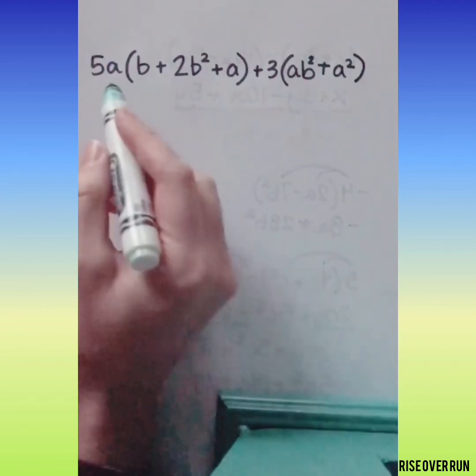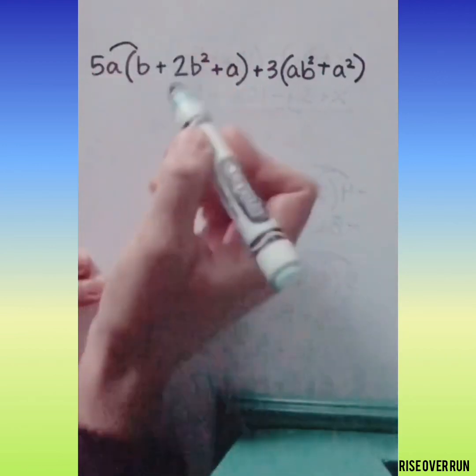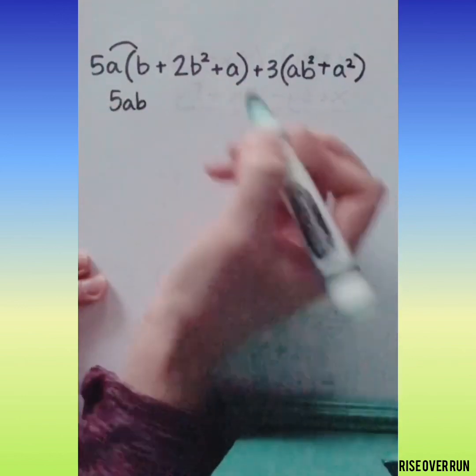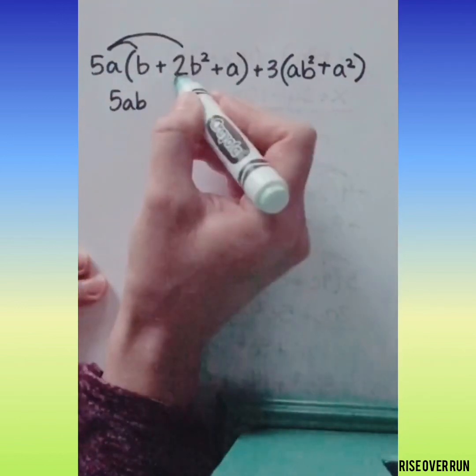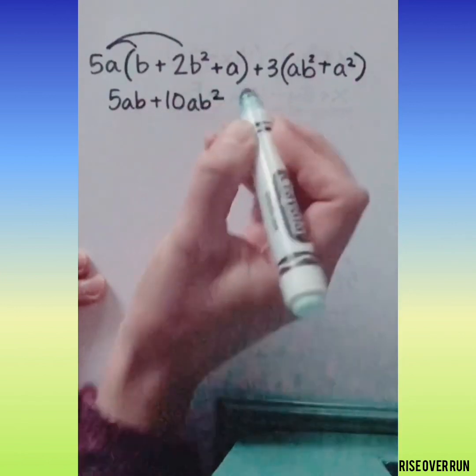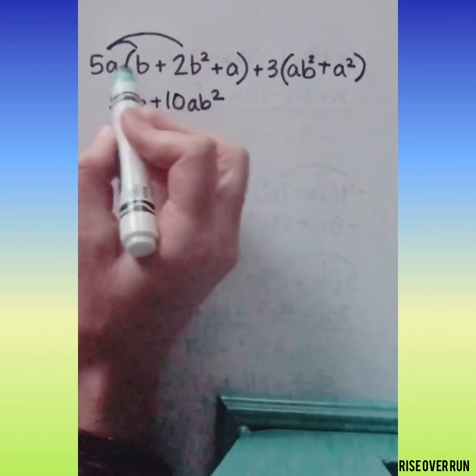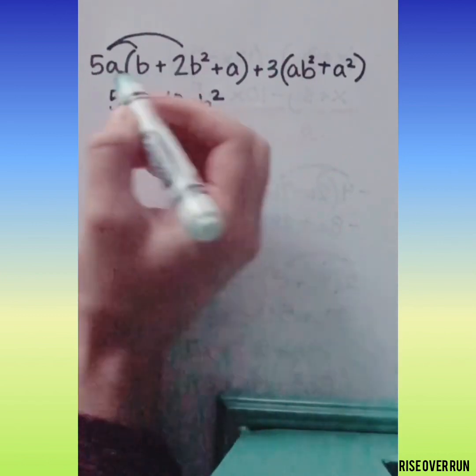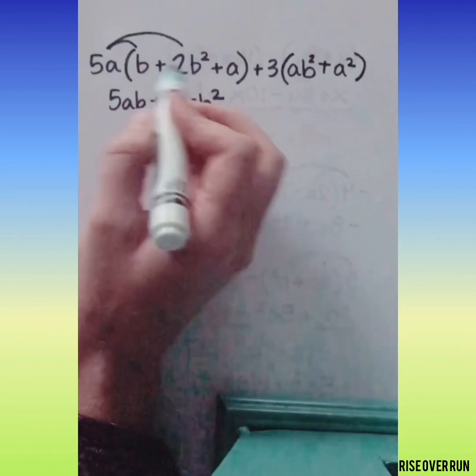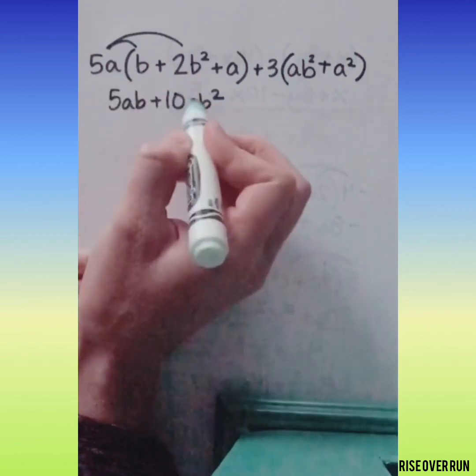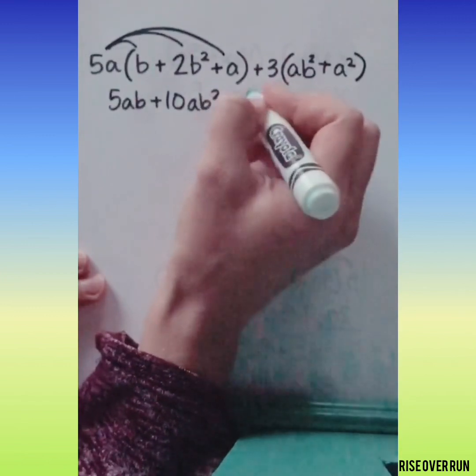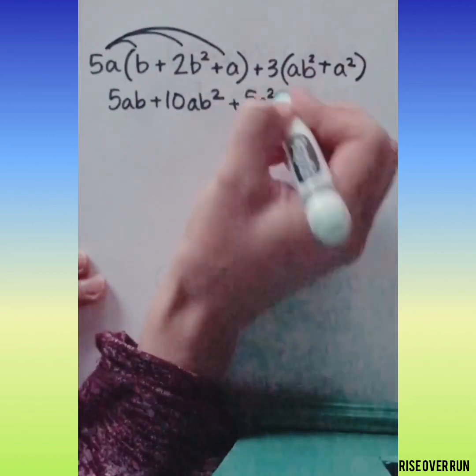Let's try this one. First we'll distribute 5a times b is 5ab. 5a times 2b squared is 10ab squared. You're multiplying the coefficients and then if you can do anything to combine the variables, but in this case they're different so we just need to be sure each one is there. 5a times a is 5a squared.